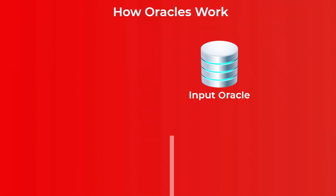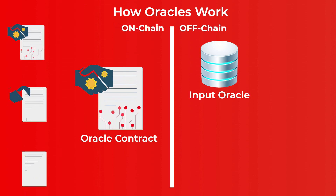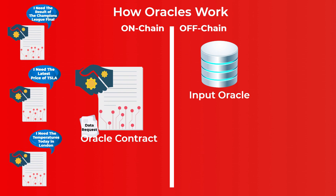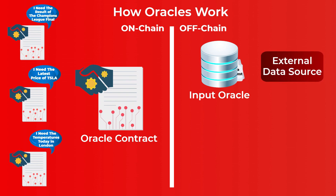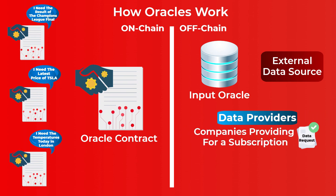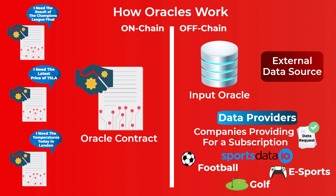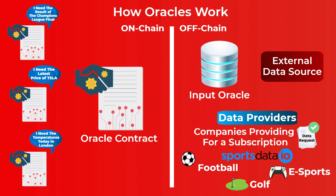For an oracle node to work, there has to be a smart contract on the blockchain — called an oracle contract — to receive data requests from other smart contracts and send those requests to the oracle node in the real world. After the oracle node receives a request, it gathers the needed data from external data sources, which are most often data providers — companies that provide trusted, reliable data for a paid subscription. For example, sportsdata.io provides results and data for many sports like soccer, football, golf, and even esports. The oracle node then sends the data to the oracle contract in a transaction format readable on the blockchain, and the oracle contract forwards it to the smart contract that originally requested the data.